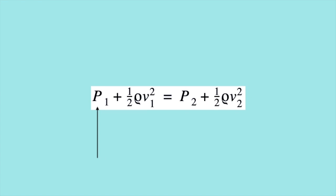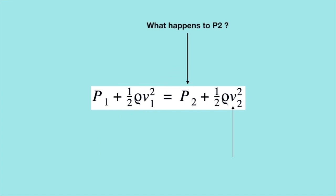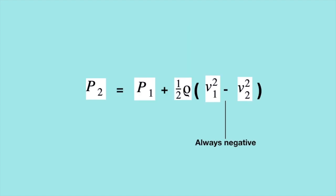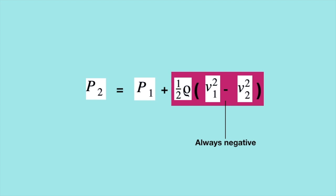We can simplify the equation: the velocity in the wider section is v1 with pressure p1. The velocity increases to v2 at the bottleneck, where v2 is larger than v1. Rearranging the equation to make p2 the subject, since v2 is larger than v1, the term inside the bracket is always negative, making p2 smaller than p1. In other words, for a stream of air with constant density, the faster it flows, the lower the pressure — this is the most important conclusion.